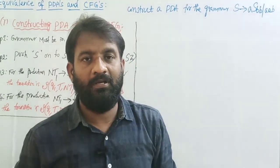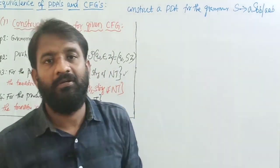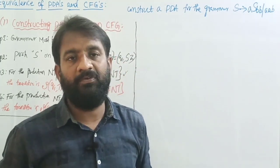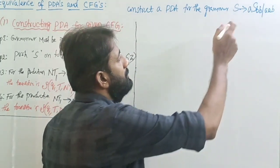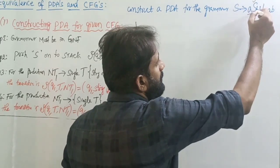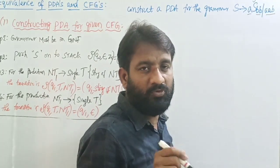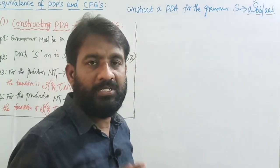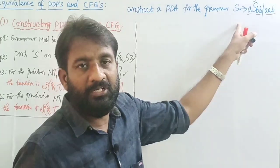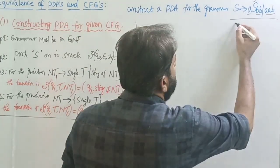Welcome back. The topic is to convert the given context-free grammar into a pushdown automata. The first step is to convert the given grammar into Greibach Normal Form. If you observe, this is not the Greibach Normal Form — terminal followed by non-terminal followed by terminals. Greibach Normal Form accepts only a single terminal at the RHS, or a terminal followed by any number of non-terminals. So we need to convert this grammar into Greibach Normal Form.